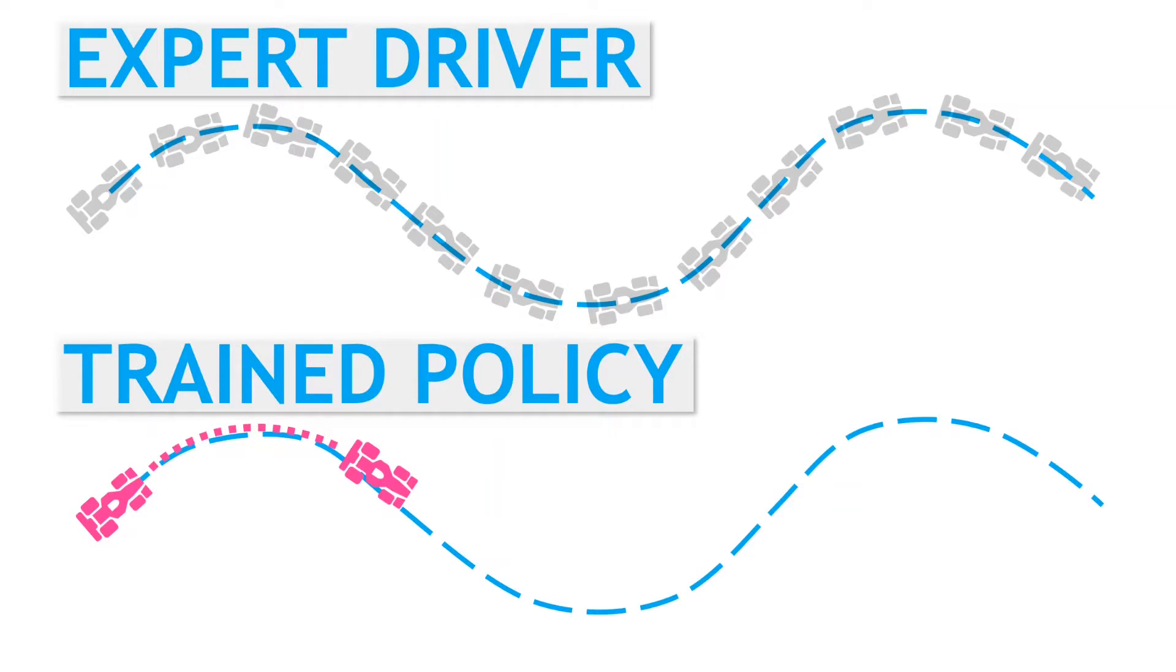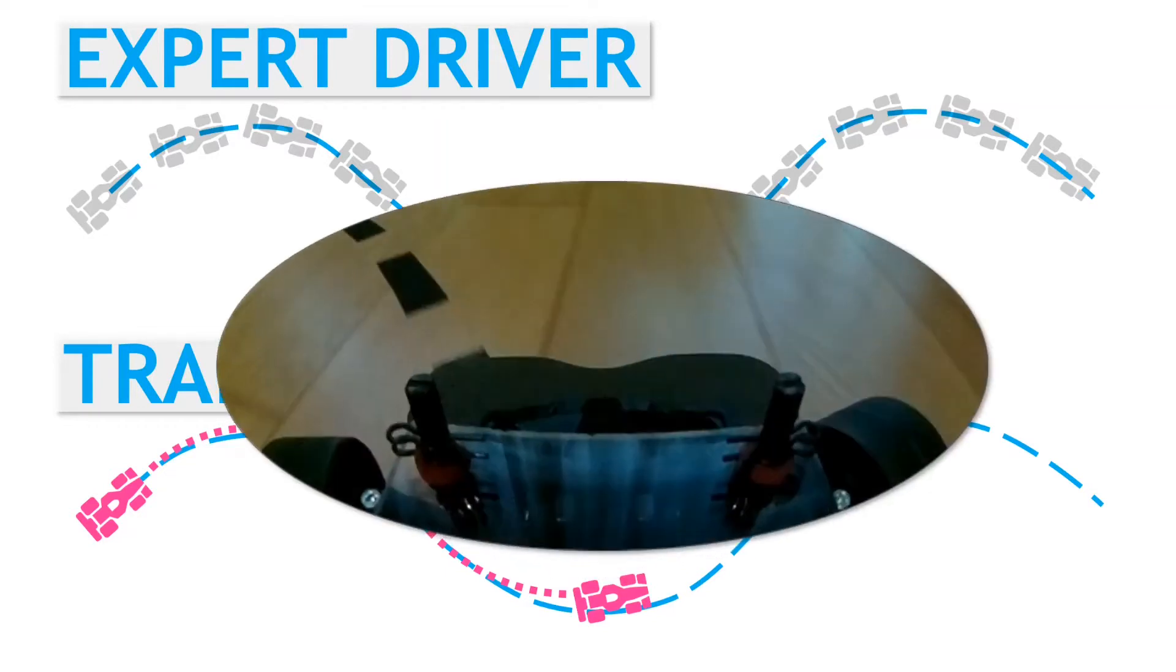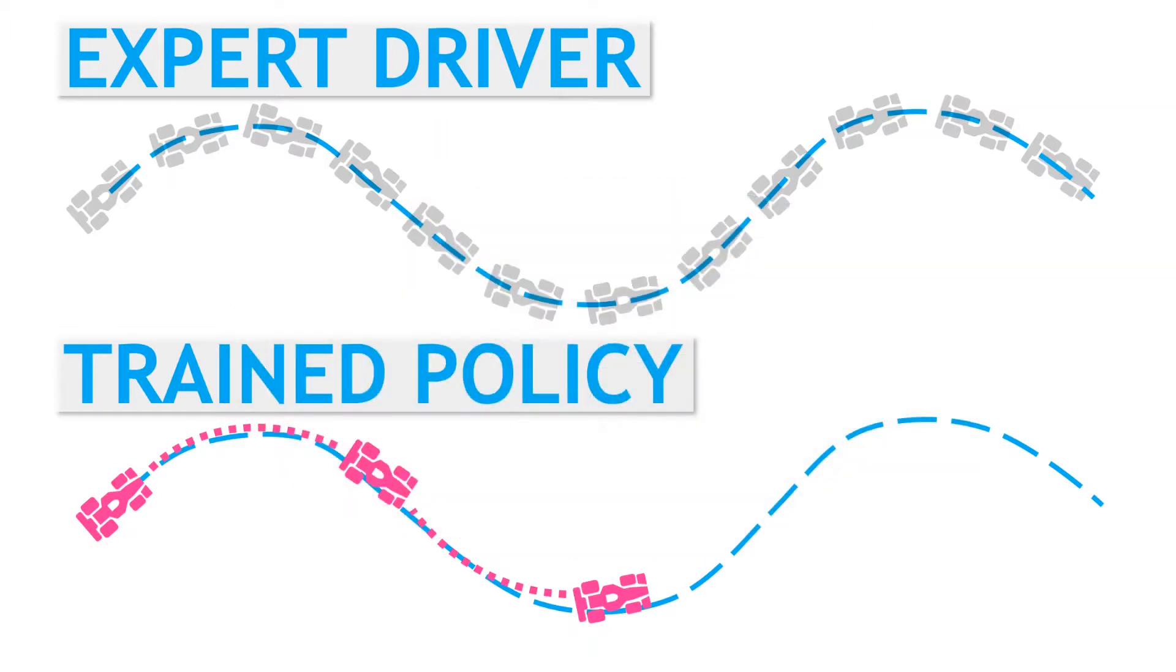However, any small errors in the driving predictions will tend to move the vehicle slightly away from the ideal driving line. The problem is that as we move off this driving line, we start to see images or views of the track that were not well covered in the training data. So with these unfamiliar images, our policy model is a little less accurate with its predictions.